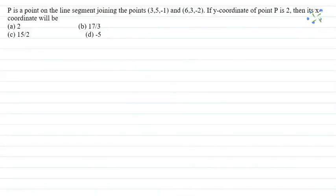Hello students, I'm the teacher of this question. Let me explain. P is a point on the line segment joining the points (3,5,-1) and (6,3,-2). If the y-coordinate of point P is 2, then its x-coordinate will be. Options are: 2,